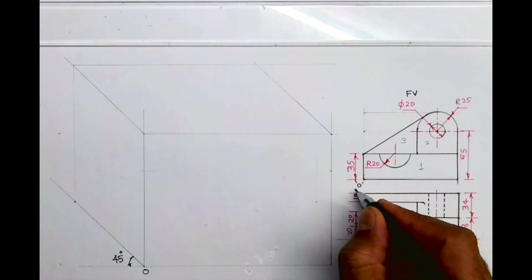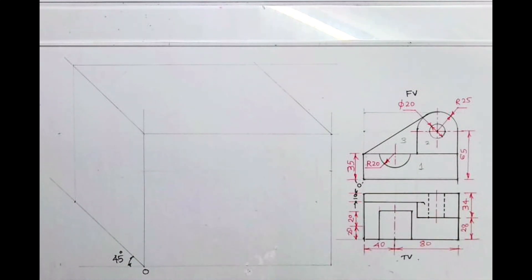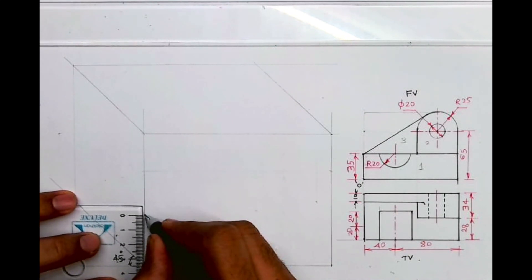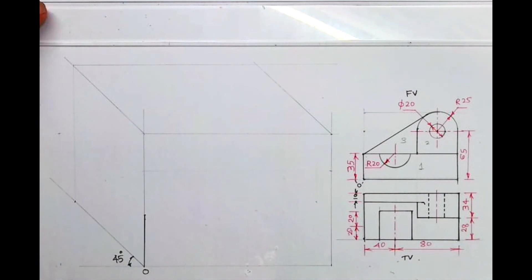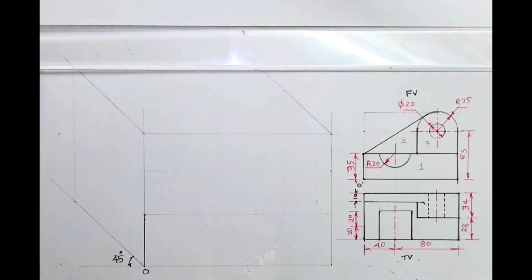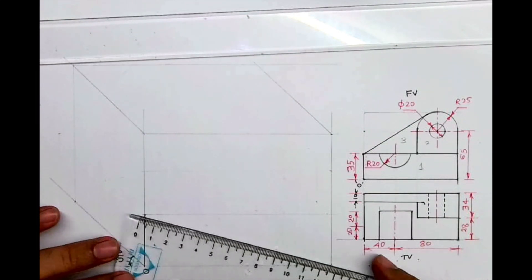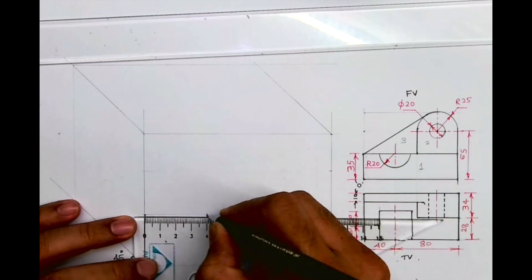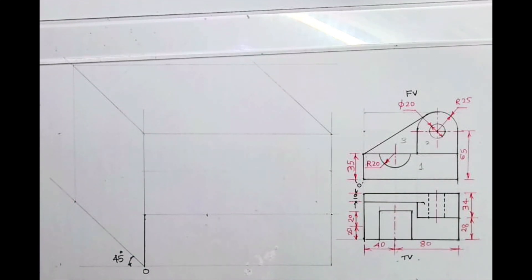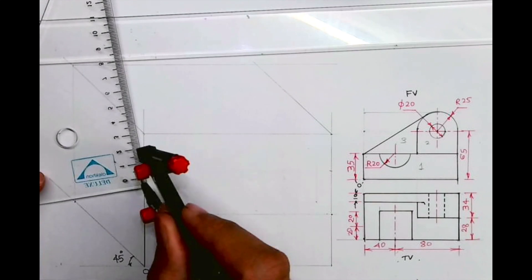This distance is not given, I'll take it as 10. I'll start with part one. The height is 35, so I will take 35. Always remember, whatever is in the front, the same thing is behind. With that concept, you take this part behind. Take the midpoint — it's given as 40, so at 40 you mark the center, then take radius 20.